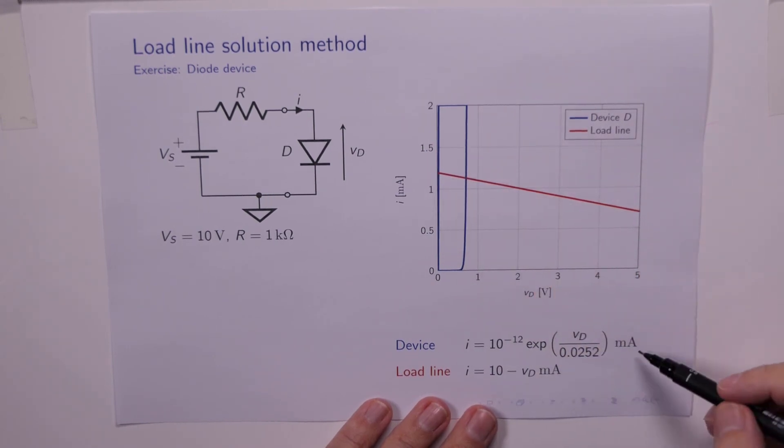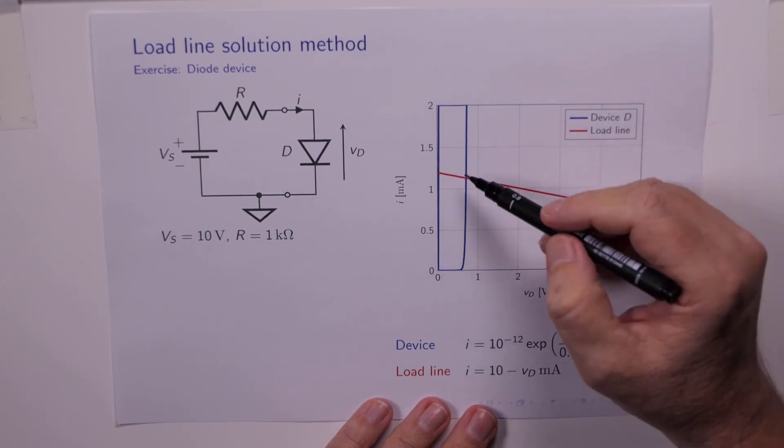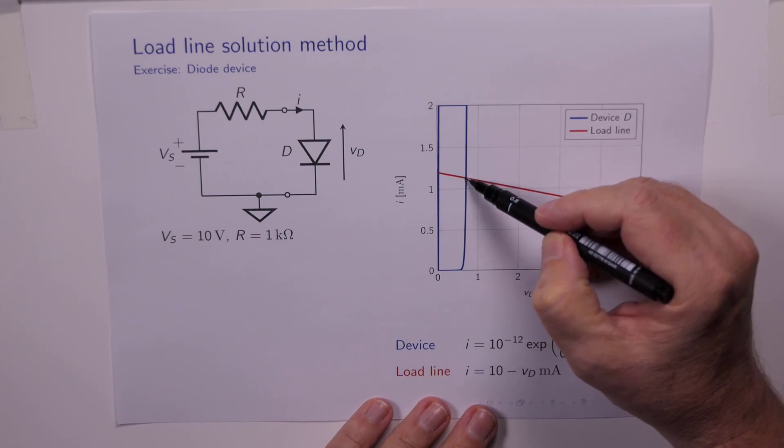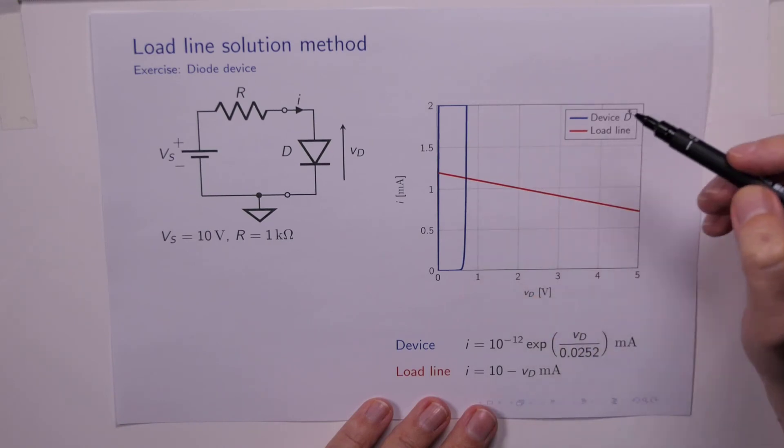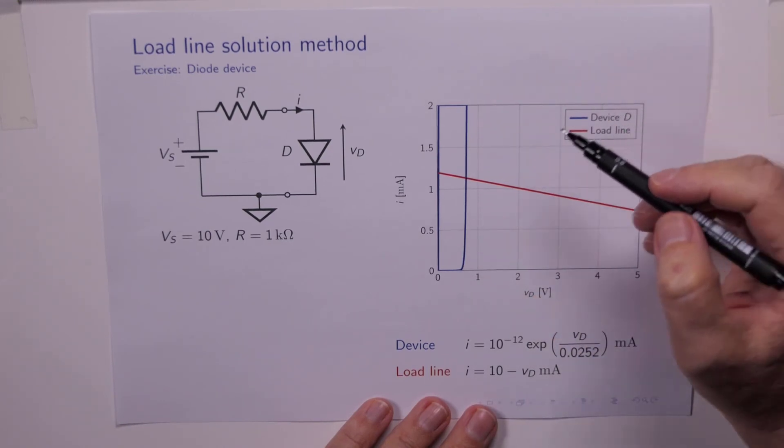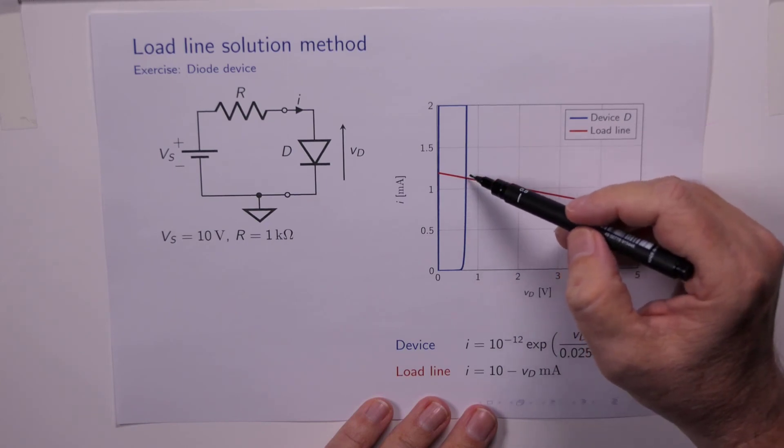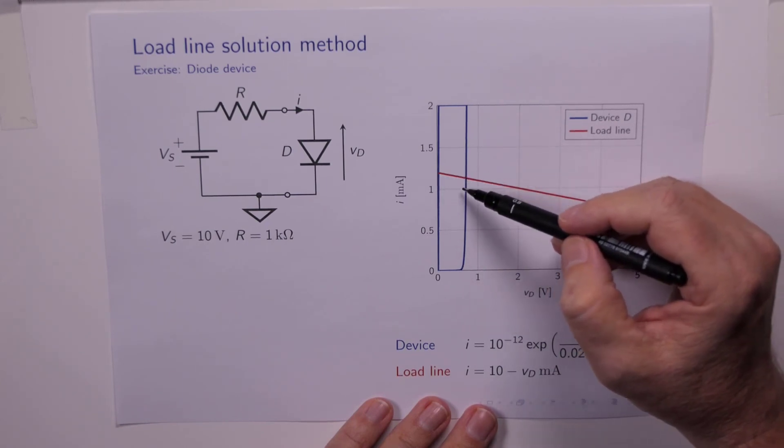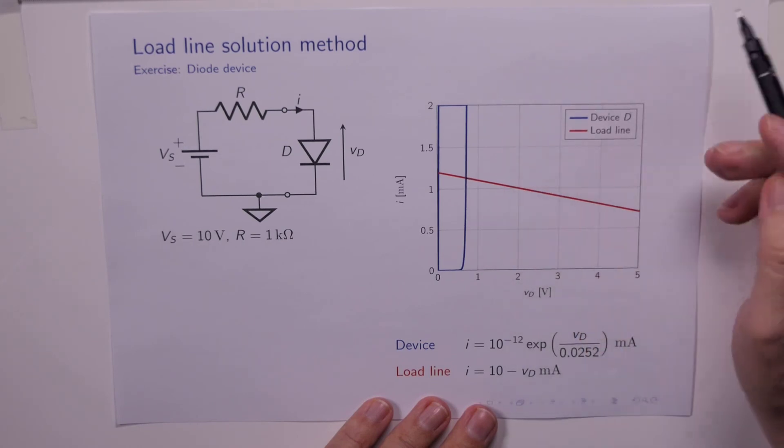And if we equate these two equations and try and solve for Vd, it simply can't be done. The only way to figure out what's going on is to either read off this operating point from the graph, or we can use an iterative method to guess a solution and eventually home in on the solution there.